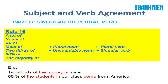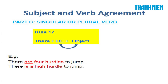Rule number 17: Cấu trúc 'There is/are' — 'there' thường đi với động từ 'to be', và chia is/are tùy thuộc vào object nằm đằng sau. Ví dụ: 'There are 4 hurdles to jump' — 4 hurdles là plural nên dùng 'are'; 'There is a high hurdle to jump' — singular nên dùng 'is'.